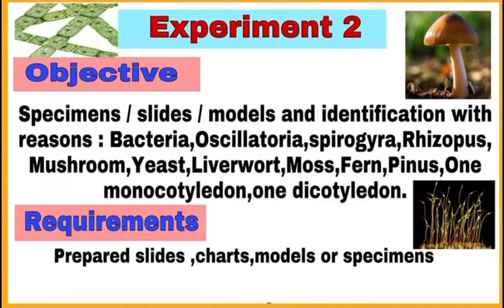First, write the objective and requirements of the experiment. The objective or aim is specimens, slides, models and identification with reasons of bacteria, oscillatoria, spirogyra, rhizopus, mushroom, yeast, liverwort, moss, fern, pinus, one monocotyledon plant and one dicotyledon plant. For this we require prepared slides, charts, models or specimens.